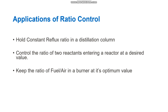There are many applications of ratio control. It is used in a distillation column to hold a constant reflux ratio. It is also used to control the ratio of two reactants entering a reactor at a desired value. A very good example is in a boiler, where the fuel-to-air ratio is controlled in a burner to achieve its optimum value.